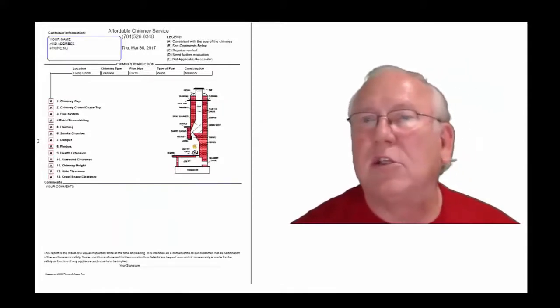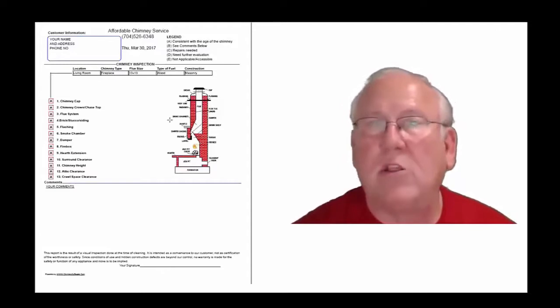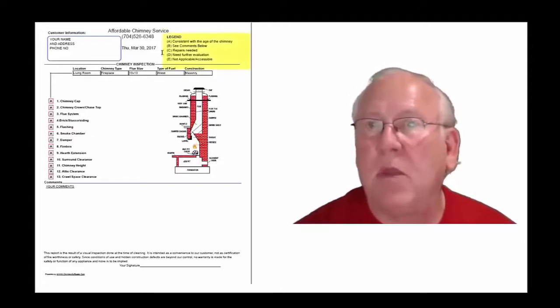Okay, now let's take a look at the inspection report and see how it reads out. This is a generic report. This is exactly what you will get, only your information obviously will be filled into all these blanks. The upper right-hand corner of the report is the legend. Each one of these initials pertains to something: A is consistent with the age of the chimney, B is comments below, C is repairs needed, D is further evaluation needed, or E is not applicable.